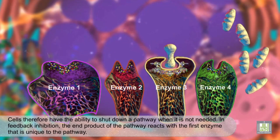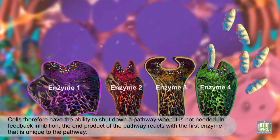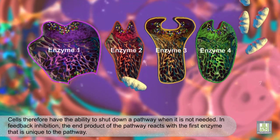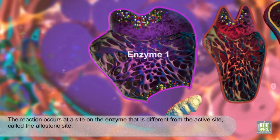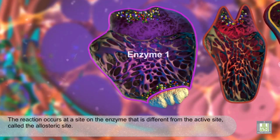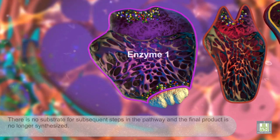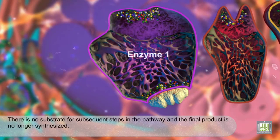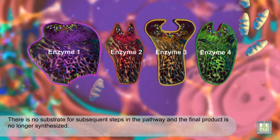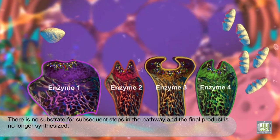In feedback inhibition, the end product of the pathway reacts with the first enzyme that is unique to the pathway. The reaction occurs at a site on the enzyme that is different from the active site, called the allosteric site. When the product binds to the allosteric site, the enzyme undergoes a conformational change and can no longer react with its substrate.